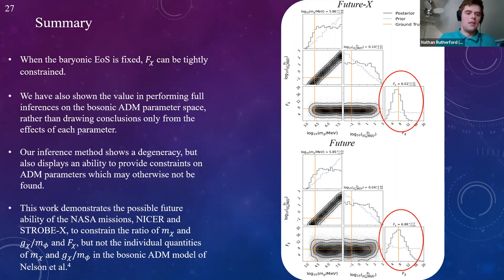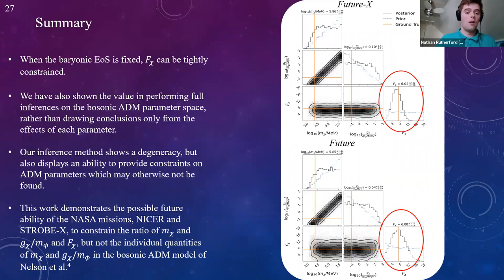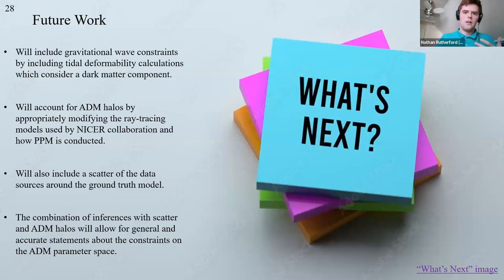This work demonstrates the future ability of NASA missions such as NICER and STROBE-X to constrain the ratio of dark matter particle mass and mass fraction, but not the individual quantities of particle mass and self-repulsion strength in the Nelson et al. model.